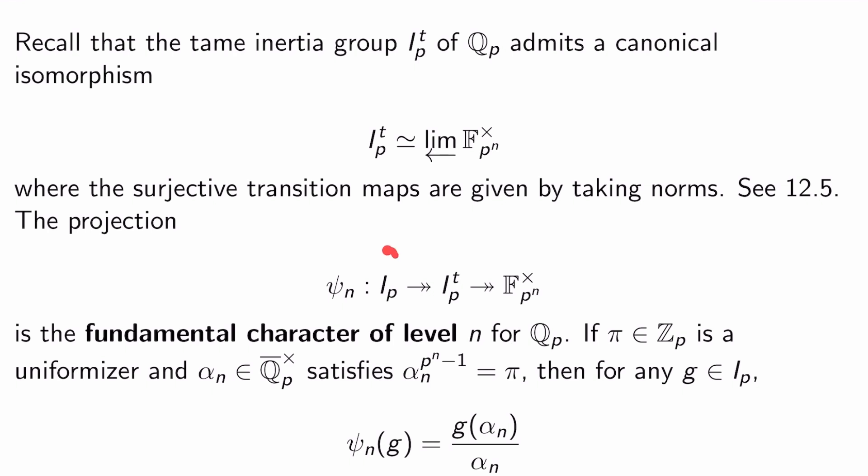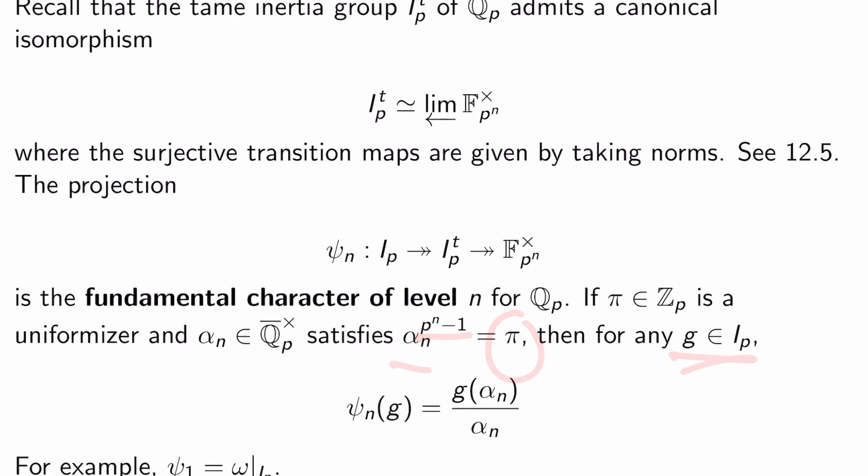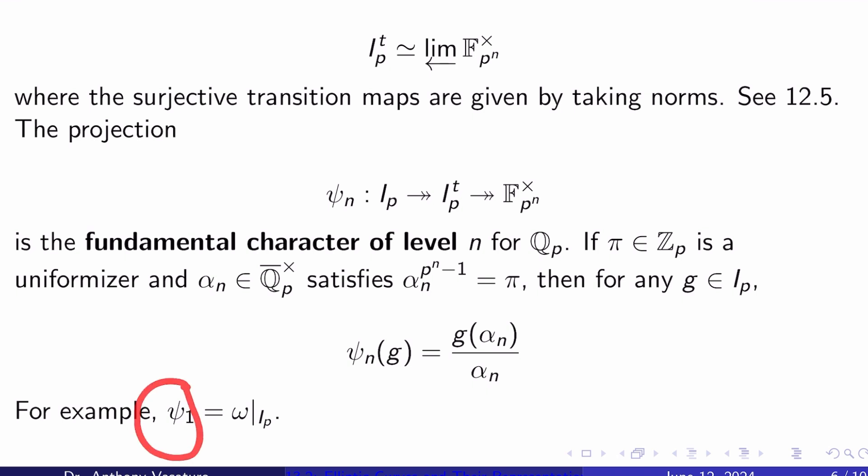The projection psi_n, so there's a projection from the actual inertia group at P onto this tame inertia group. And then you can follow that up because of this isomorphism with a surjection onto F_{p^n}^×. This is called the fundamental character of level N for Q_P. If pi in Z_P is a uniformizer, and alpha_n in Q bar_P^× satisfies alpha_n^{p^n - 1} equals pi, then for any g in the inertia group at P, psi_n(g) has an explicit formula for it, and it's just g(alpha_n) divided by alpha_n. For example, you can check that the first fundamental character is just the cyclotomic character restricted to the inertia group at P. That's an easy exercise.